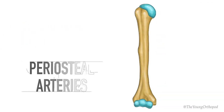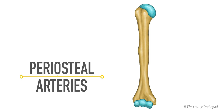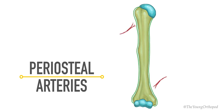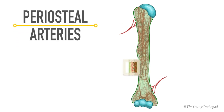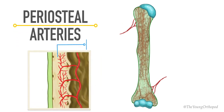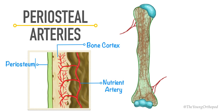The periosteum has a rich blood supply from blood vessels which anastomose beneath the periosteum. Periosteal arteries act as a low-pressure system and penetrate bone at the sites of attachment of the fascial sheath or aponeurosis. They enter the Volkmann's canal and supply roughly the outer one-third of the compact bone of the diaphysis.